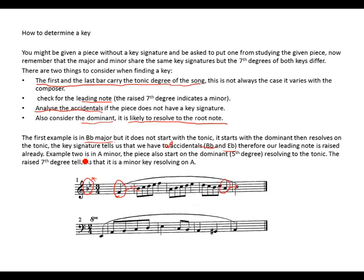Example two is in A minor. The piece also starts on the dominant — the fifth degree — resolving to the tonic A. The raised seventh degree tells us it is a minor key resolving on A. A sharp is placed before the note to make it a semitone before the root A, confirming the key of A minor.